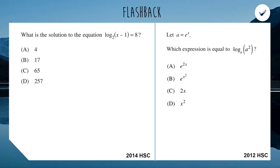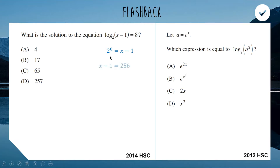For the first one from 2014, we need to solve for x, so we're going to rewrite this logarithmic equation as an exponential equation. We have 2 to the power of 8 equals x minus 1 — we do that circular motion from previous videos. 2 to the power of 8 is 256, so x minus 1 equals 256.